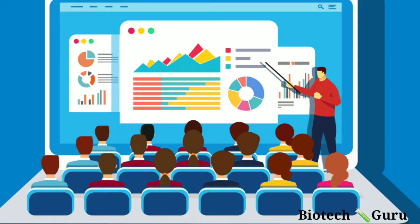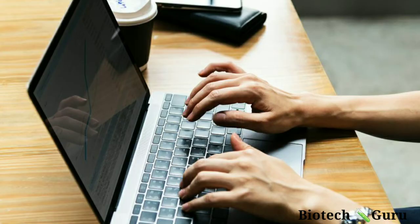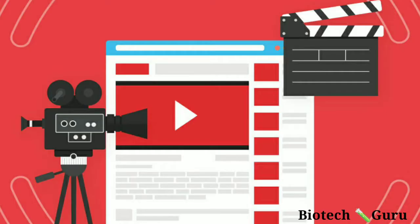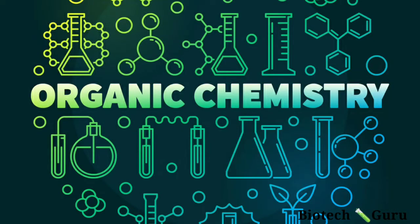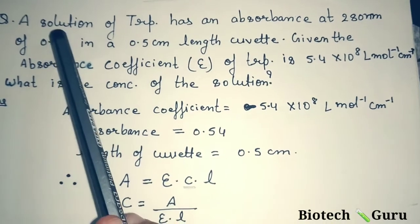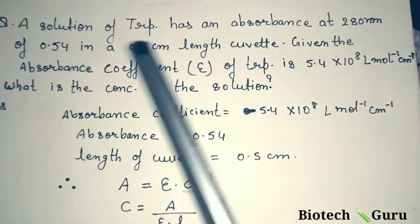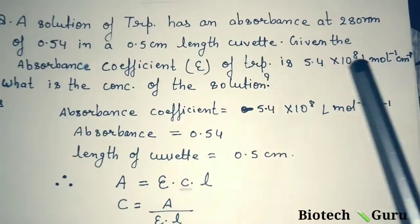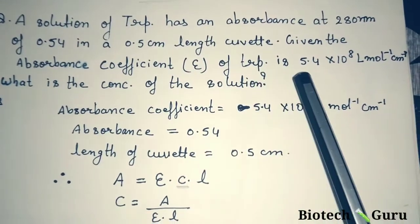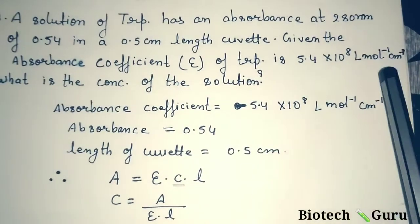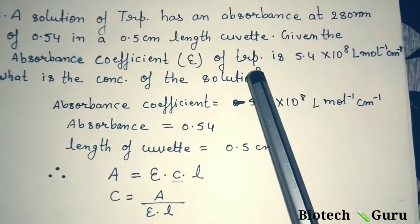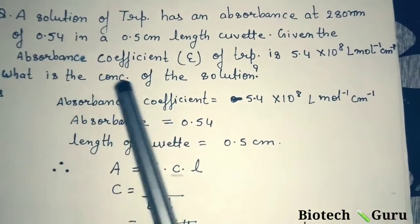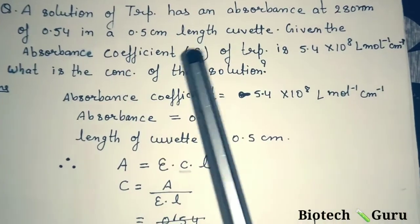Before we start today's video, in the previous video I had given a question to all of you, which was related to the Lambert-Beer Law. So first let us see the answer to that question. Here is the question: A solution of tryptophan has an absorbance at 280 nanometers of 0.54 in a 0.5 centimeter length cuvette. Given the absorbance coefficient of tryptophan is 5.4 × 10⁸ liters per mole per centimeter, what is the concentration of the solution?